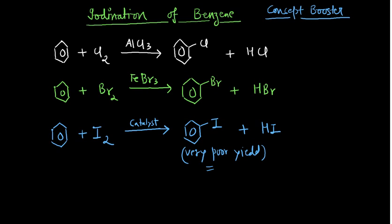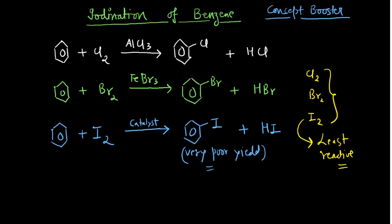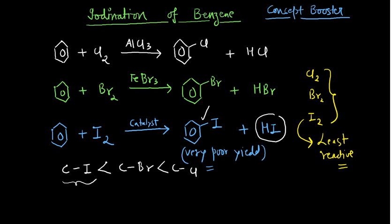What is the reason? If you compare the halogens — chlorine, bromine, and iodine — iodine is the least reactive among all of them. Additionally, the carbon-iodine bond is very, very weak compared to the carbon-bromine bond, and the carbon-bromine bond is weaker than the carbon-chlorine bond. Due to this weak bonding, the C-I bond quickly breaks with the help of HI, a reversible reaction occurs, and you get benzene back — so the yield decreases.